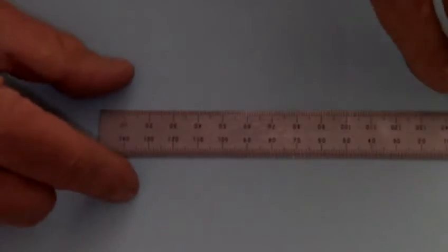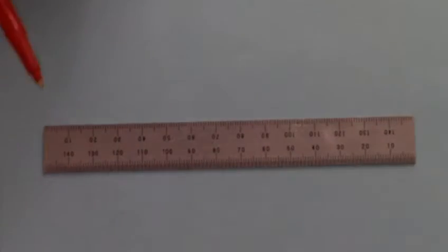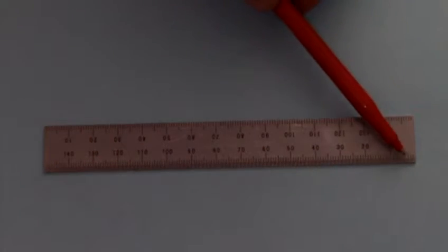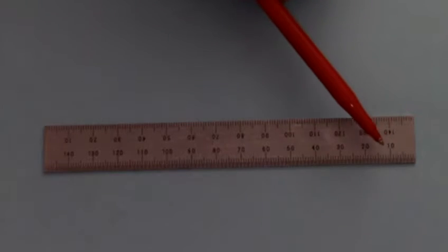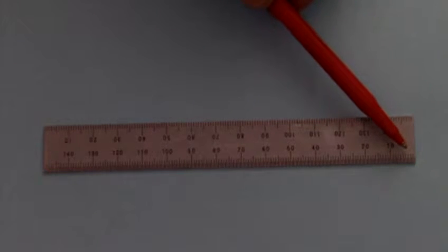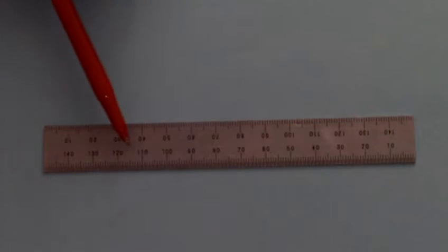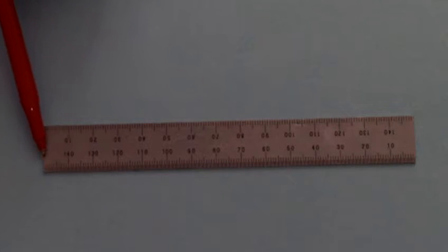If we turn the rule around, you will notice there are now 20 graduations on the rule. So each graduation would be a half a millimeter, and then one full millimeter, millimeter and a half, two millimeter, up to ten millimeter, then eventually all the way down the rule to 150 millimeter.